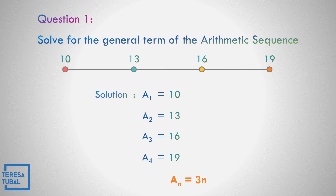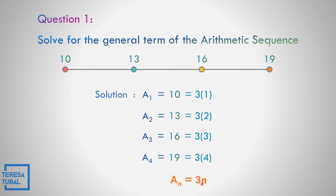Let us replace all the values into the given equation. Replace n by 1: that is 3 times 1. Replace n by 2: 3 times 2. Replace n by 3: 3 times 3. Replace n by 4: 3 times 4. Based on the given, what do you think is the number to be added to get 10? Correct — 7. Because 3 times 1 is 3, plus 7, that is equal to positive 10.